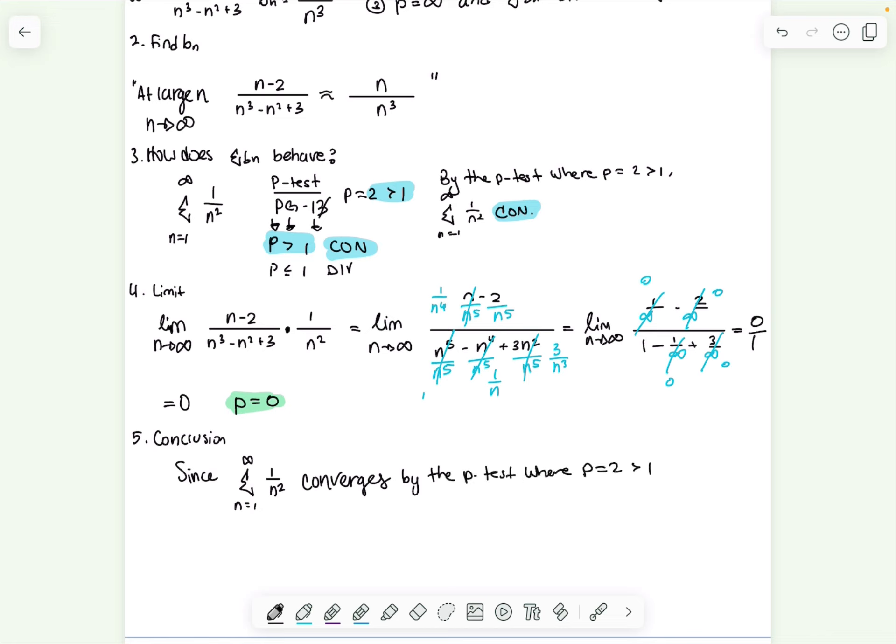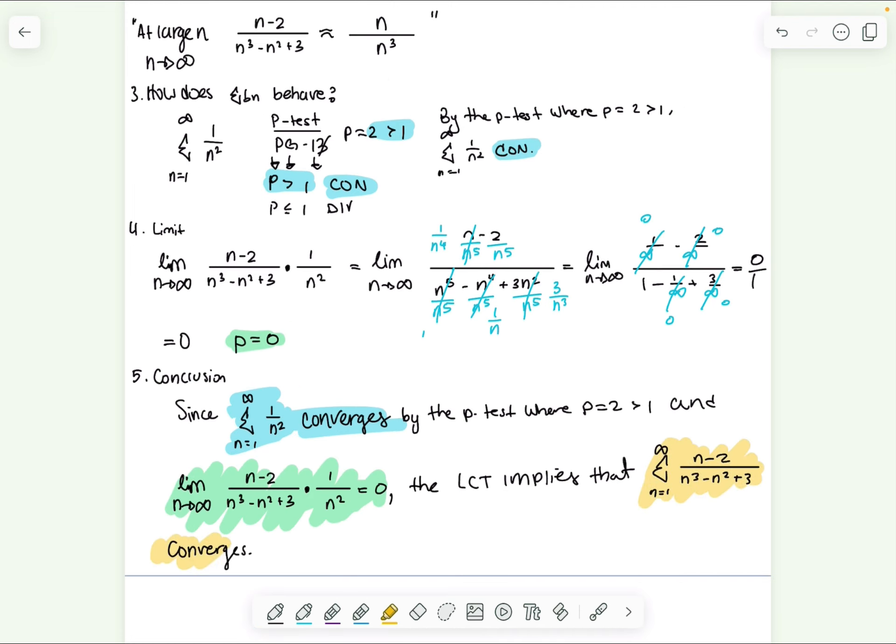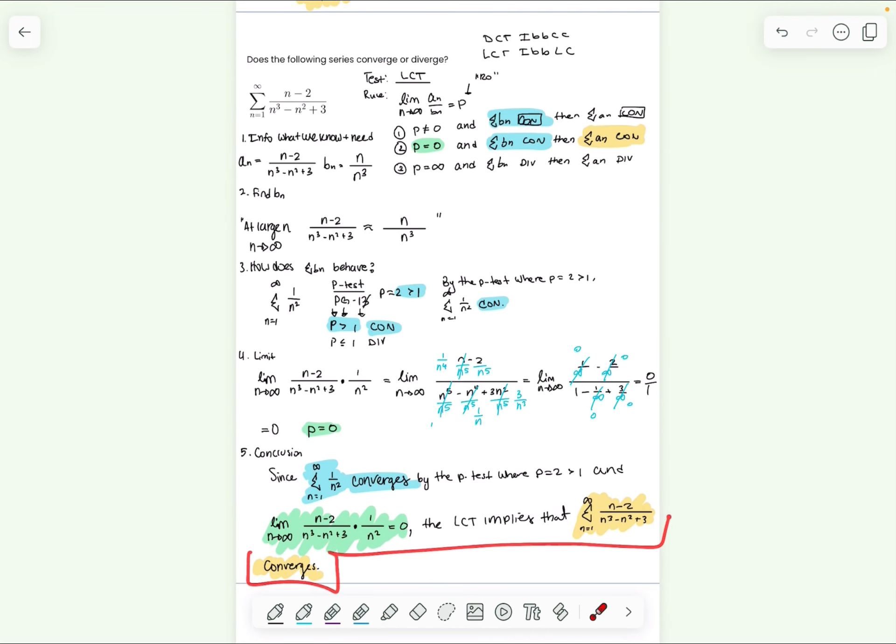Converges by the p-test where p equals two, which is greater than one. And so this is our blue part. I literally just write this and I say equals zero. That's my green part. Comma, the Limit Comparison Test implies that the given series from n equals one to infinity, this right here, converges as well. That's our yellow part. So this is our answer and this is our justification. So make sure you have your three parts and that's it for this problem. I'll see you in the next one.